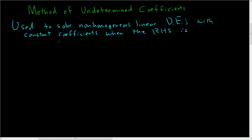One, the right-hand side could be a polynomial. A polynomial is a finite sum of integral powers of x. For example, 2x cubed plus x — that would be a polynomial. So if the right-hand side of your differential equation is 2x cubed plus x, then you could use the method of undetermined coefficients.